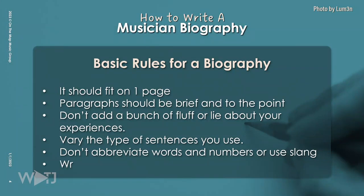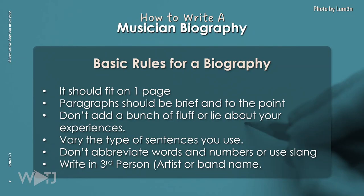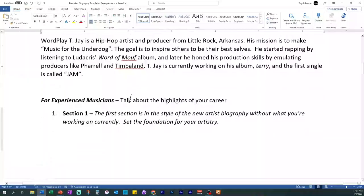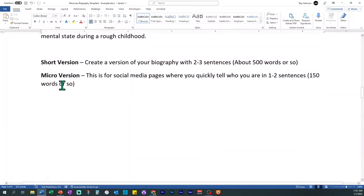There are also some additional things to keep in mind. Write in third person — using the artist's name and pronouns like he, she, or they. It's a bird's-eye view of the situation, describing it from the outside rather than your own point of view. When talking about song titles, they're usually in quotes, and album titles are usually italicized or underlined. From there, you should be able to formulate sentences and combine them into an accurate bio. The template also includes a section to create a short version and a micro version of your biography.